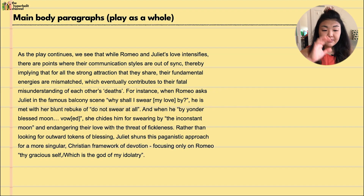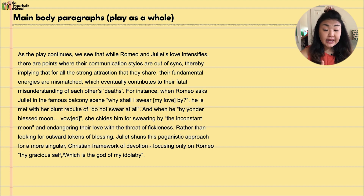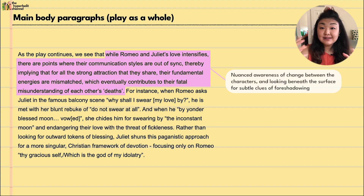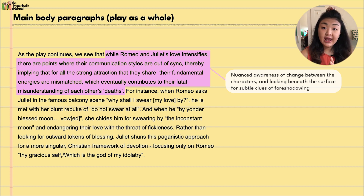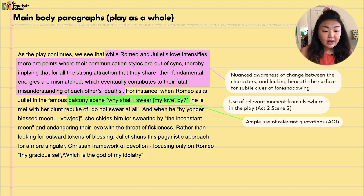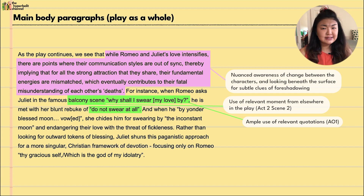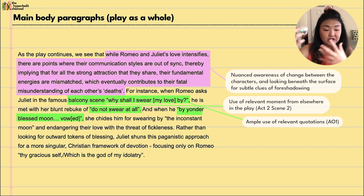The student then moves to analysis of the play as a whole. As the play continues, while Romeo and Juliet's love intensifies, there are points where their communication styles are out of sync, implying that for all the strong attraction they share, fundamental energies are mismatched, which eventually contributes to their fatal misunderstanding. For instance, in the famous balcony scene, when Romeo asks 'What shall I swear my love by?' he is met with Juliet's blunt rebuke 'Do not swear at all,' and when he swears by the moon, she chides him for swearing by the inconstant moon.